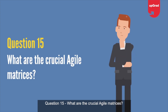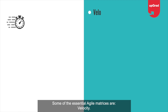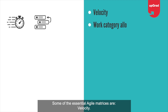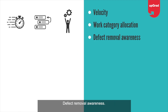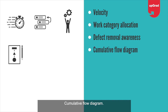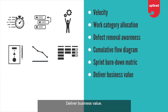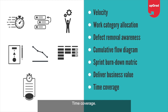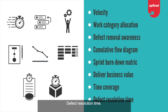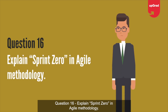Question 15: What are the crucial Agile matrices? Some of the essential Agile matrices are: Velocity, Work Category Allocation, Defect Removal Awareness, Cumulative Flow Diagram, Sprint Burndown Metric, Deliver Business Value, Time Coverage, and Defect Resolution Time.